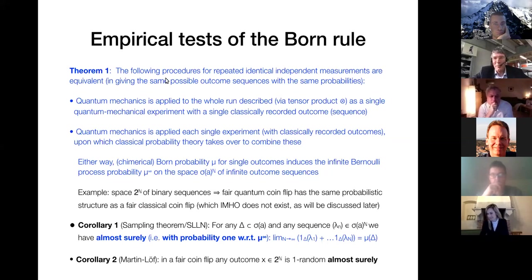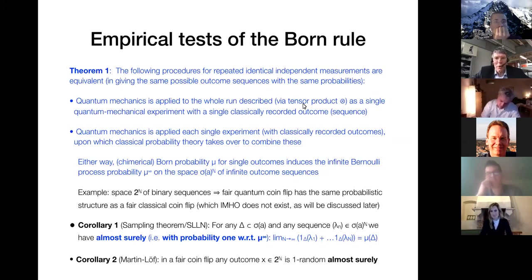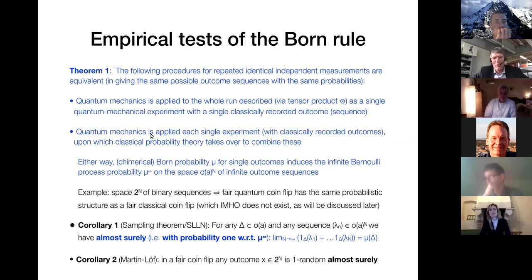Namely, the following procedures for repeated identical independent measurements are equivalent in a probabilistic sense, giving the same outcome space and the same probabilities. Either you can apply quantum mechanics to the whole run described via von Neumann's tensor product, and see this as a single experiment with a single Born rule applied to a single observable which records the outcomes of all individual experiments. Or you can apply quantum mechanics to each single experiment — think of just this quantum coin flip — record the outcomes classically, and combine this using classical probability theory.